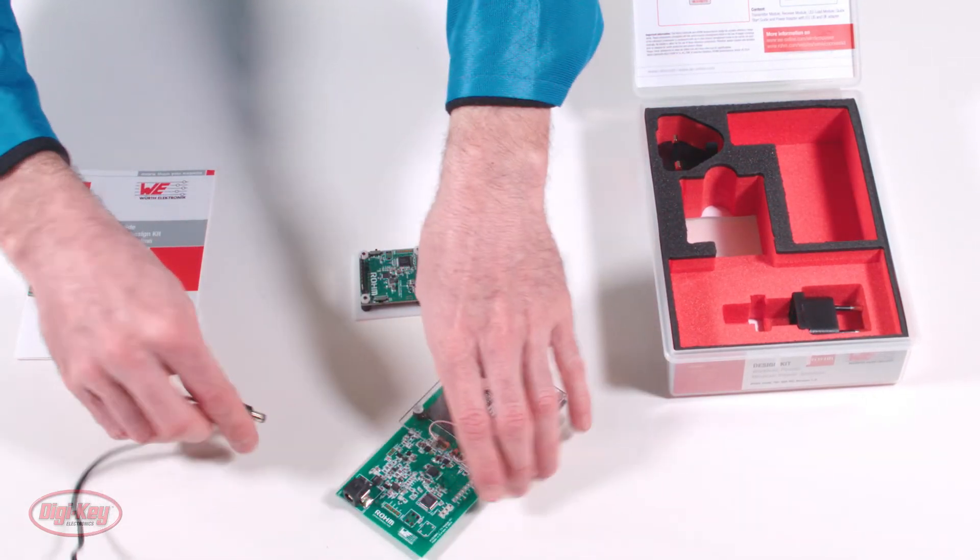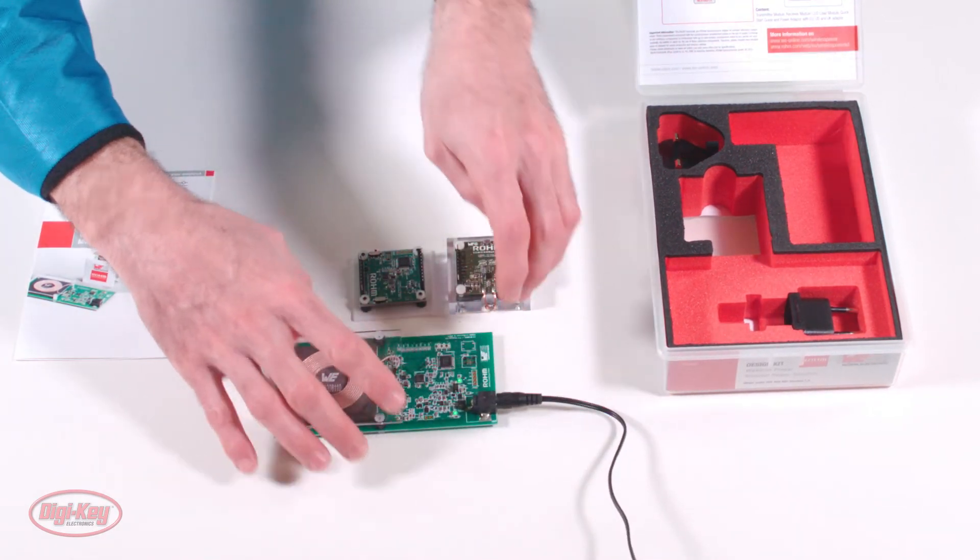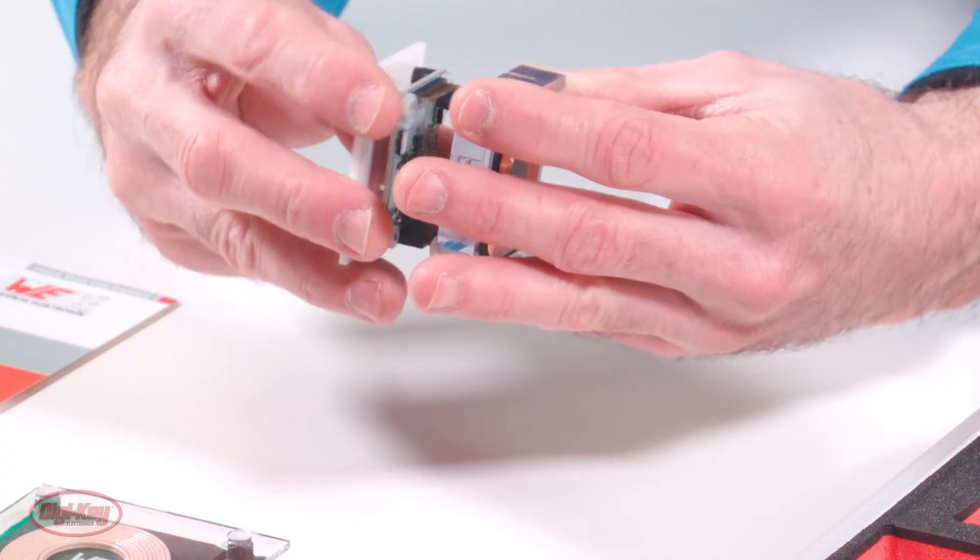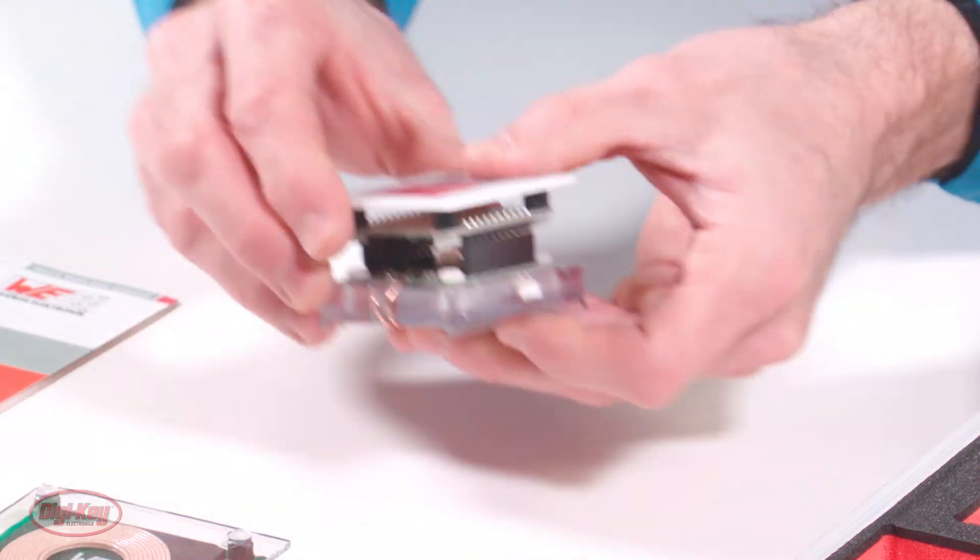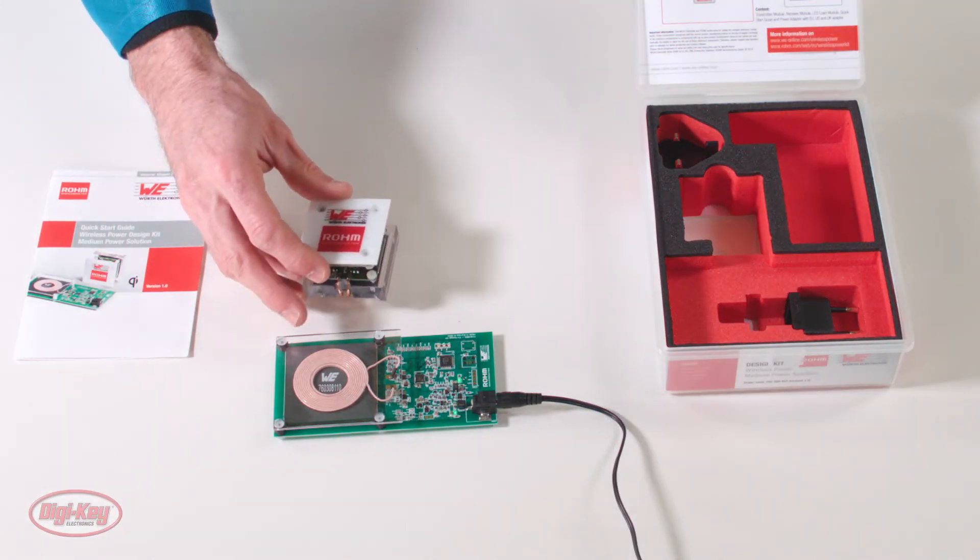At this point, I'm going to connect power to the transmitter. I'm going to place the receiver module along with the LED load module on the transmitting module.